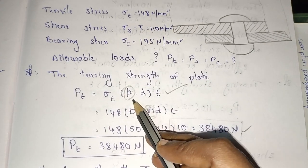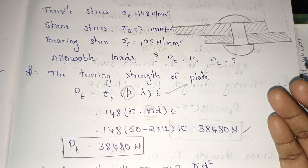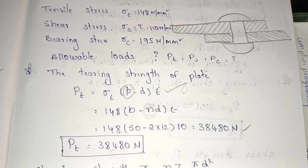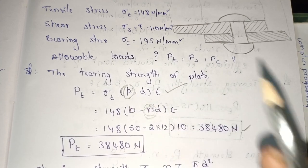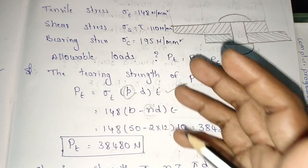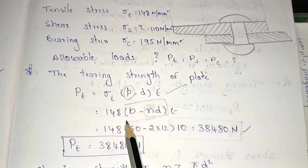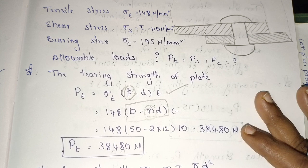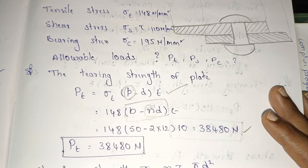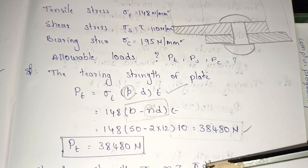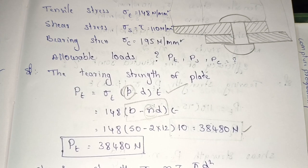Let us also check the pitch and find out the efficiency of the rivet joint. When directly asked to determine the efficiency, find pt, ps, pc first and then find efficiency. This is one of the most important SI models in rivet joints. Please like this video, share it, subscribe to the channel, and click the bell icon to get notifications for every new video. Thank you for watching.